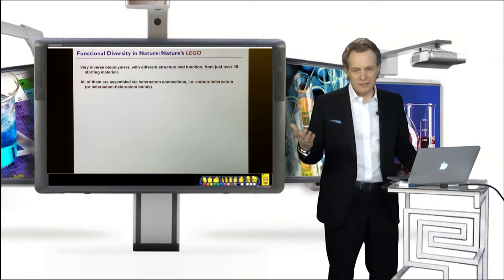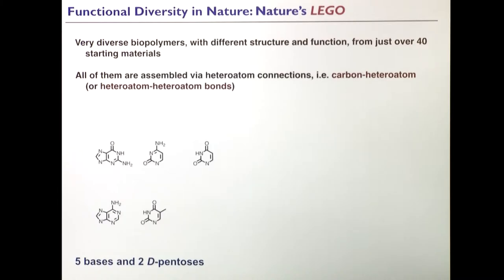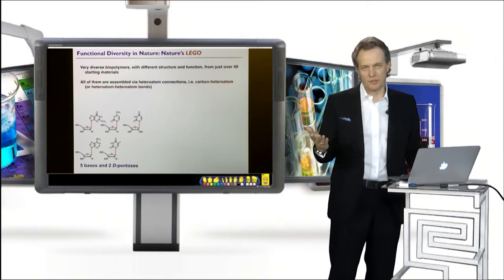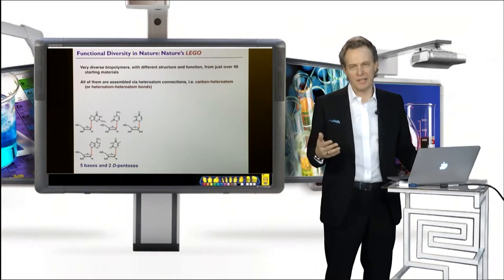But in reality, when we look at, for example, nucleic acids, all it takes is about five different bases and five carbohydrates, or two carbohydrates, two sugars, to synthesize nucleic acids, the deoxyribonucleic acid DNA and ribonucleic acid RNA.